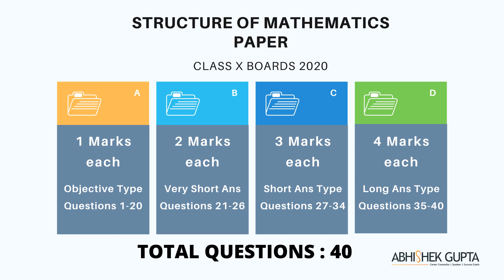Now let us talk about the structure of your mathematics paper. Your maths paper is of 100 marks, out of which 20 are for internals. We are not really bothered about internals because your school will be lenient and you will score well there. Let us focus on those 80 marks that we will face in those three hours in the board examination. Your 80-mark paper will be divided into four sections: A, B, C, and D.